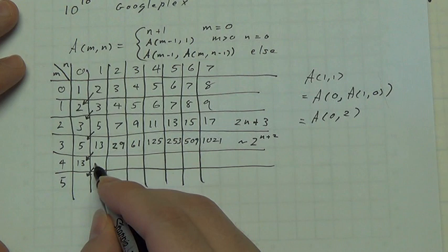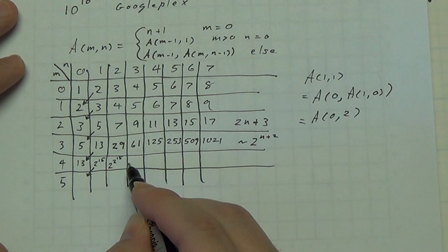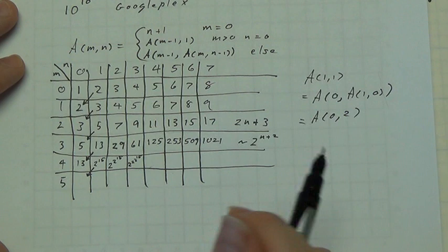Alright, so 2 to the 15. Alright, there we go. And then 2 to the 2 to the 15. 2 to the 2 to the 15. And so on.